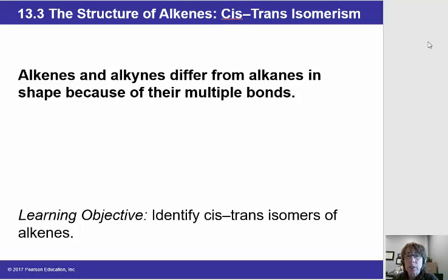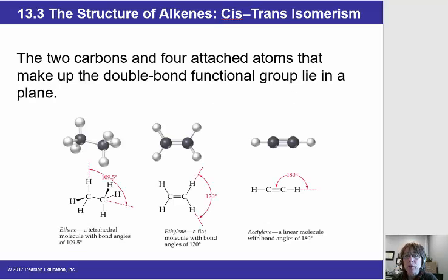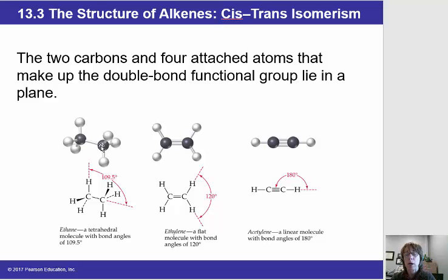Let's look at some differences between alkanes, alkenes, and alkynes. Alkanes are saturated, meaning they have only single bonds. These carbon-carbon single bonds can rotate around one another, which allows for all sorts of different conformational structures — the same exact compound that just looks different because of the rotations.